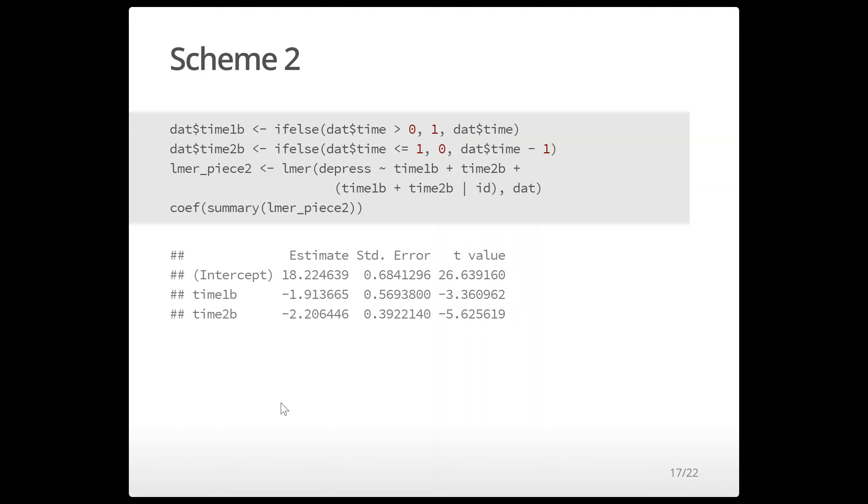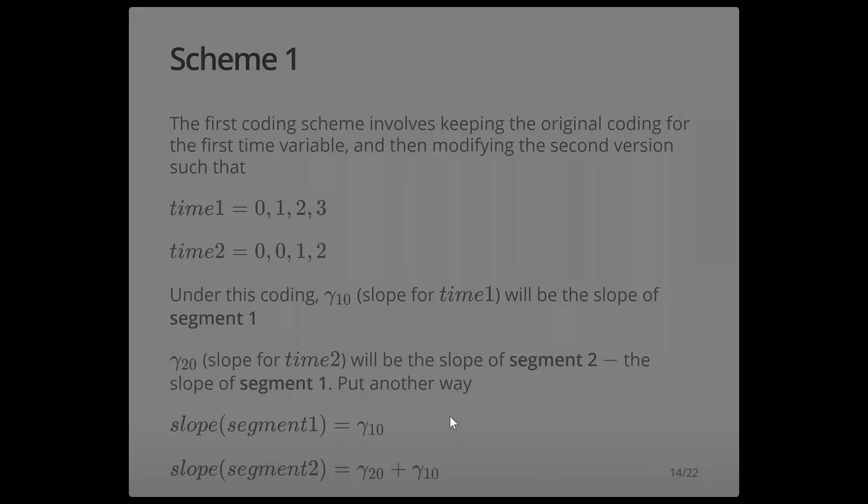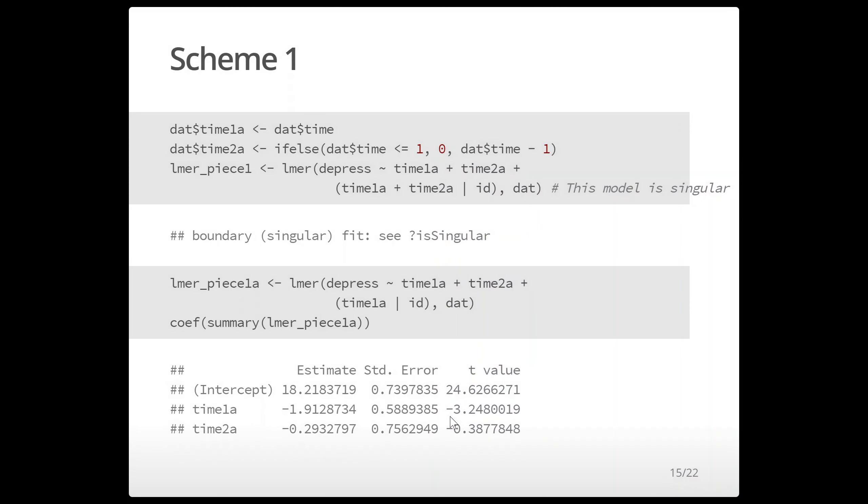And we see that the results are almost exactly the same. So here the first line segment is negative 1.91, the second line segment is negative 2.21. If we look back at our previous results, remember that the first line segment looks the same, 1.91, and then the second one is the sum of the two so here it's 2.21-ish once again.